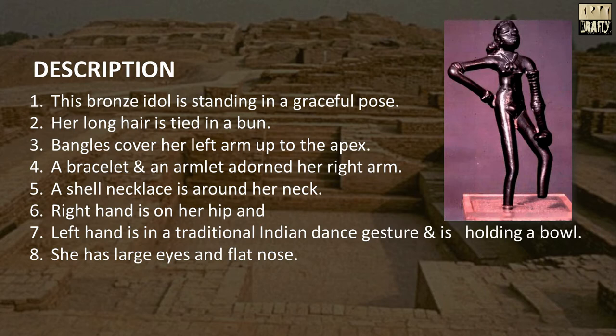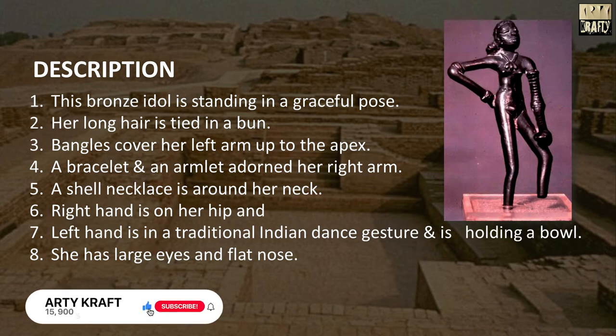This bronze idol is standing in a graceful pose. Her long hair is tied in a bun. Bangles cover her left arm up to the apex. A bracelet and an armlet adorn her right arm. A shell necklace is around her neck. Her right hand is on her hip and left hand is in a traditional Indian dance gesture, holding a bone. She has large eyes and a flat nose.